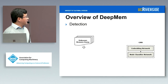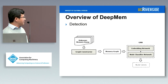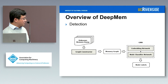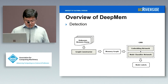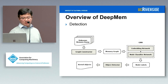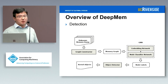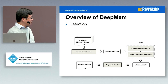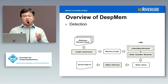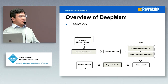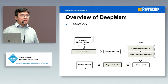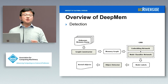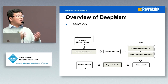For detection, we start with an unknown memory dump, run it through the same graph constructor, then through the learned model, and generate node labels for the memory graph. We also have an object detection step to detect kernel objects, because a node in the graph is not an object itself — it's a memory segment within a memory object. There may be multiple segments per object, so we perform a voting among these nodes to determine whether there's a true object at a given location.